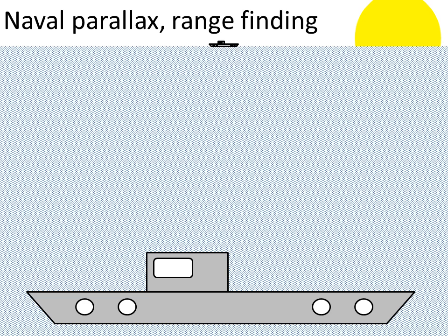Naval parallax, parallax on boats, has been used for an awful long time. What it relies on is that you can see a boat in the distance, and if you stand at the front of your boat then the object you are looking at will appear at a certain angle — here it will appear to the right — and if you stand at the back then it will appear to the left. That is only true for objects that are fairly close to us.